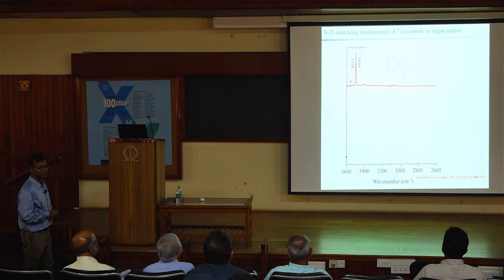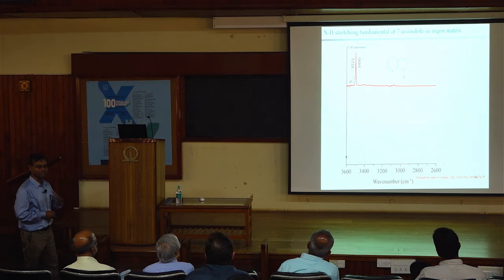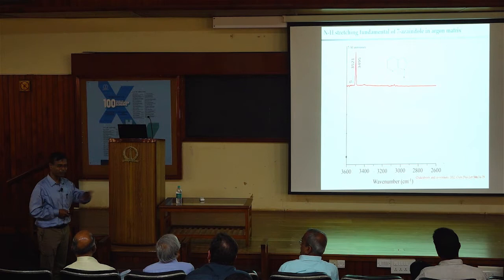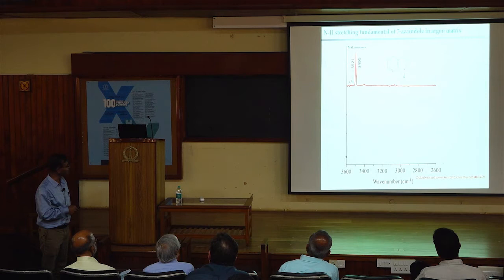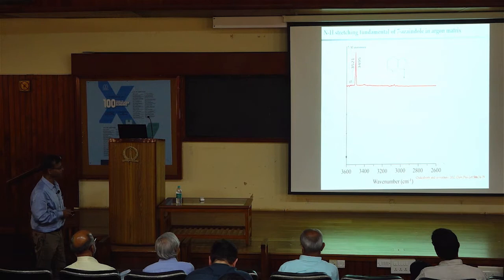If you compare with the gas phase spectrum, this region is where the CH fundamentals of the molecule should appear, but almost nothing is visible. This means that the interaction of the CH group with the argon environment completely suppresses those transitions. But you can see very prominently the NH fundamental, and there is a spectral shift — the gas phase NH stretching frequency at 3521 cm⁻¹ is shifted to 3495 cm⁻¹ in the argon matrix, giving a red shift.